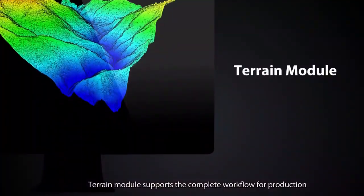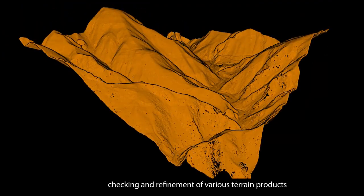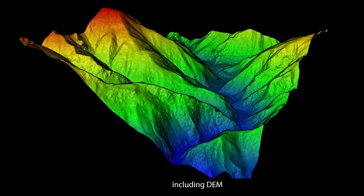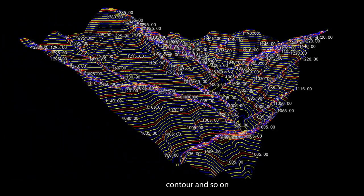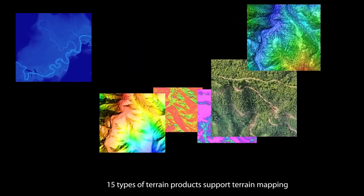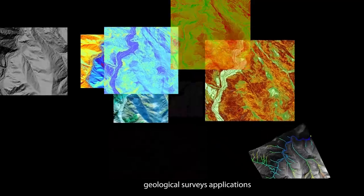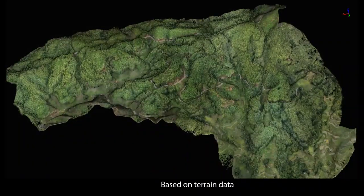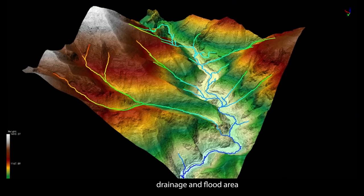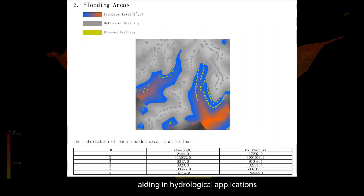The terrain module supports the complete workflow for production, checking and refinement of various terrain products including DEM, contour and more. Fifteen types of terrain products support terrain mapping and geological survey applications. Based on terrain data, it generates REM, drainage and flood area information, aiding in hydrological applications.